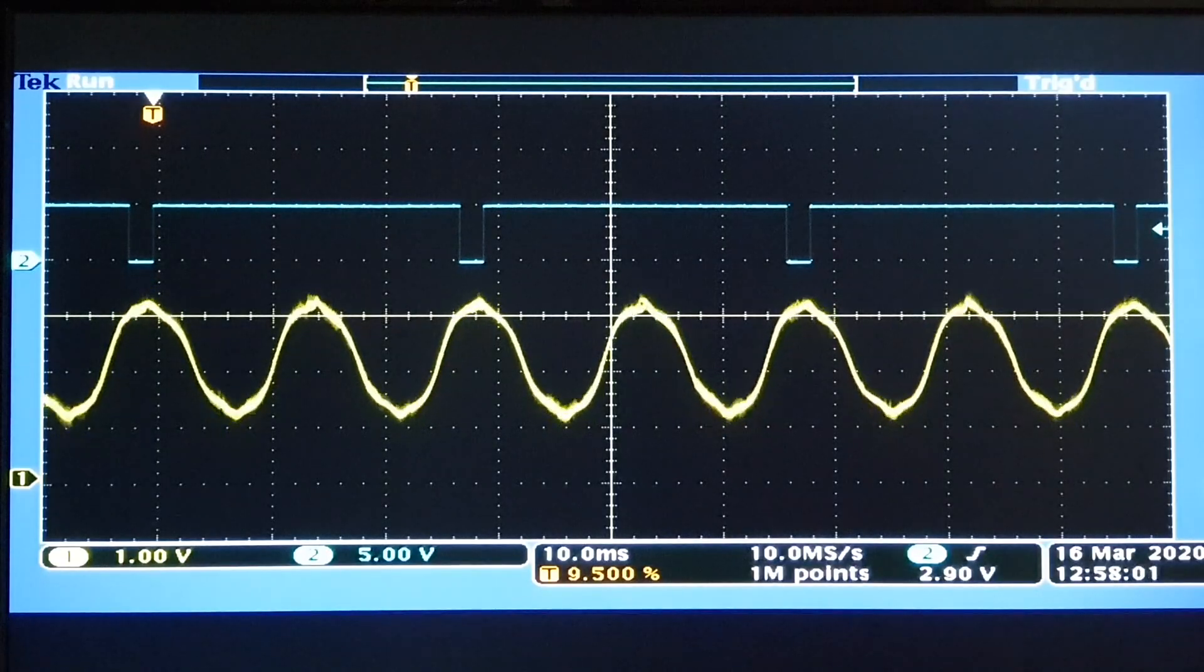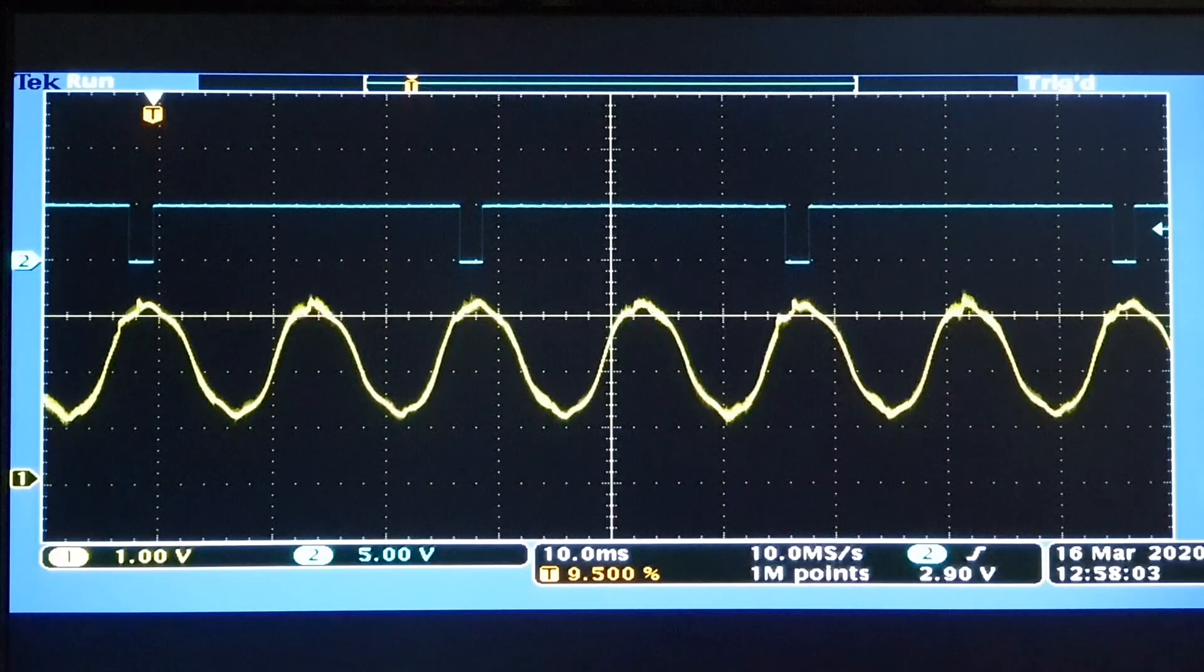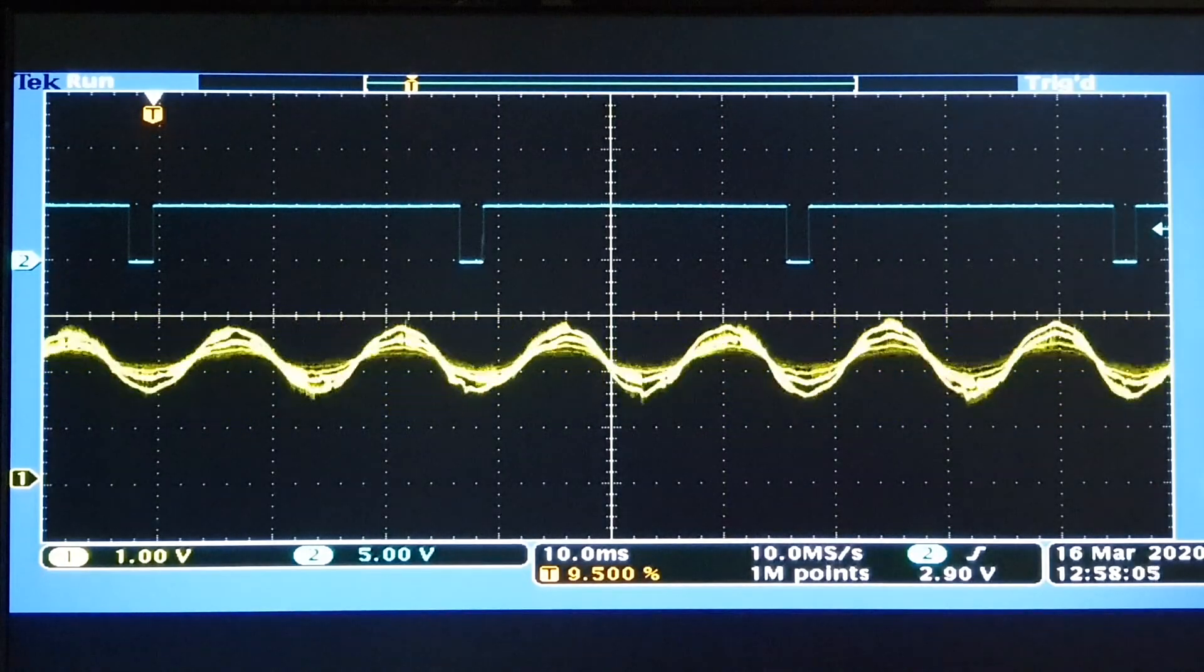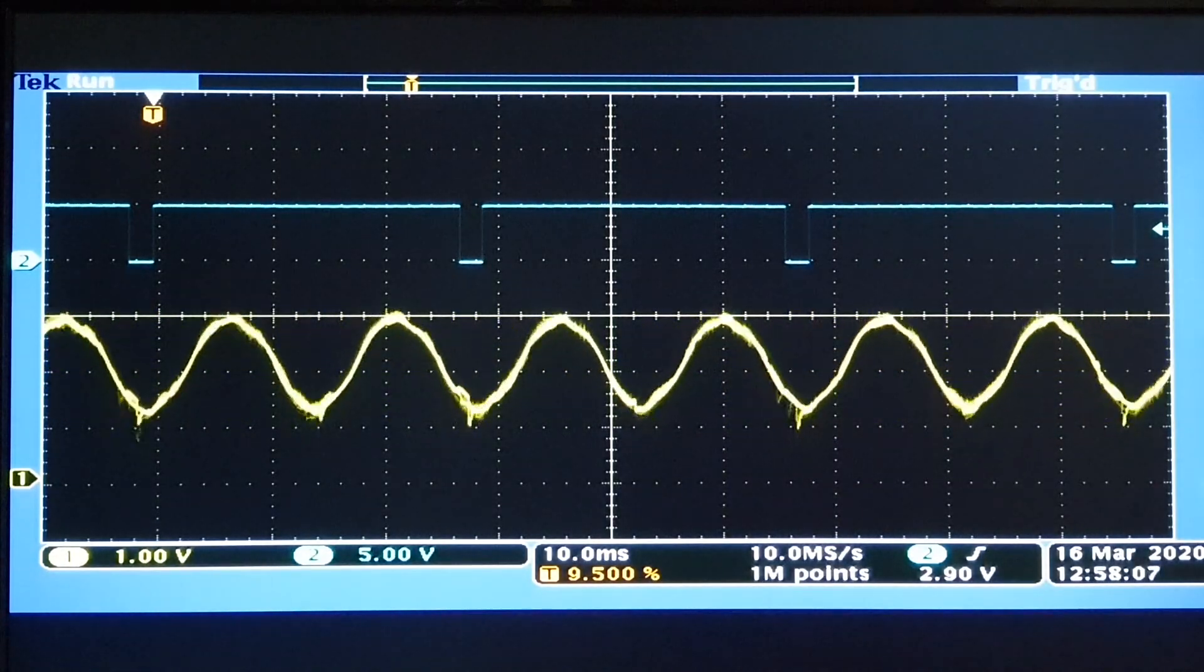The top trace on the oscilloscope shows the synchronization pulse from the Hall sensor. The trace below shows the preamp output.